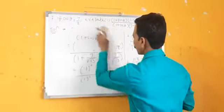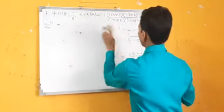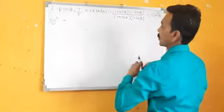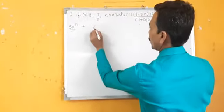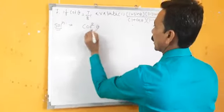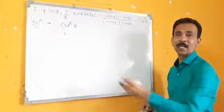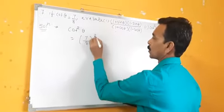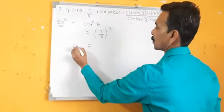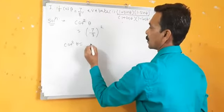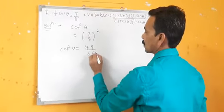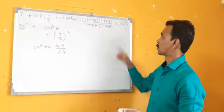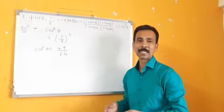For the second bit, cot squared theta: cot theta is already given as 7 by 8, so cot squared theta equals (7/8) whole square, which is 49 upon 64. So we have got both bits of this example — both equal 49 upon 64.